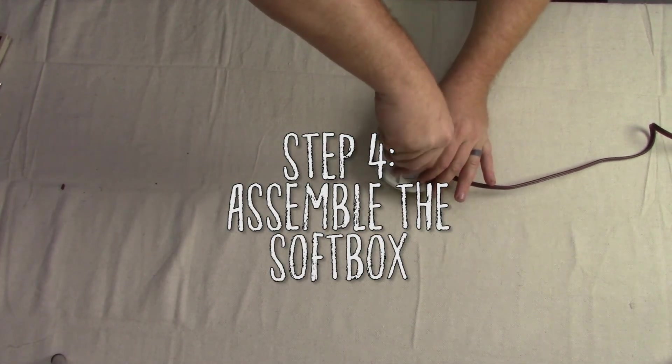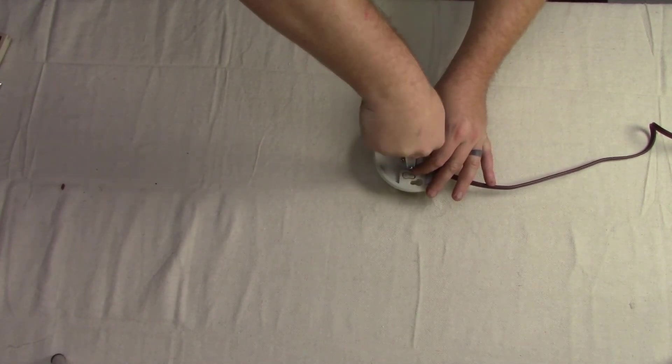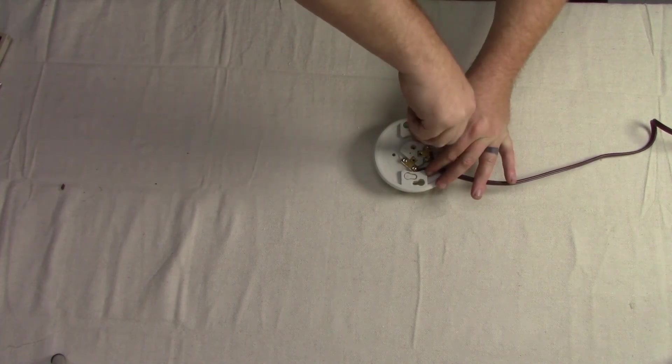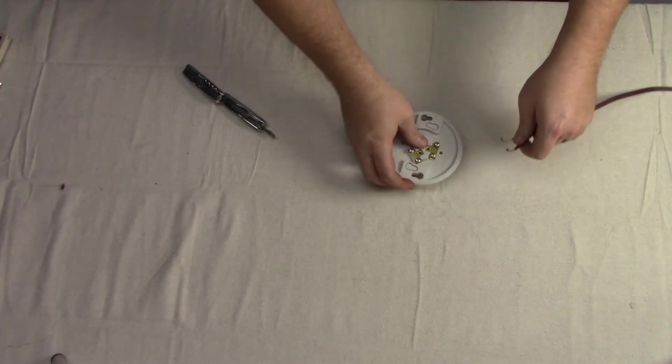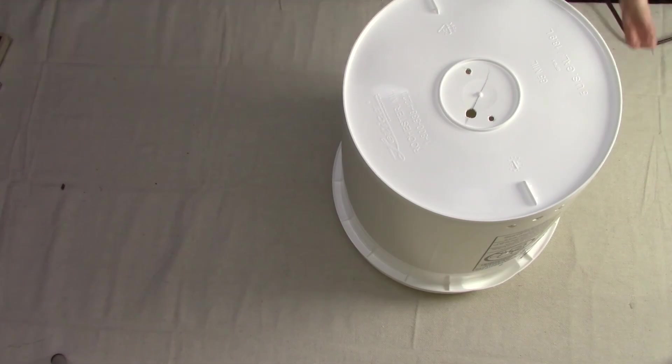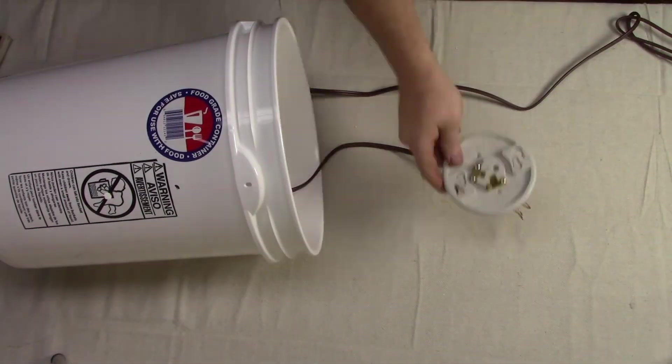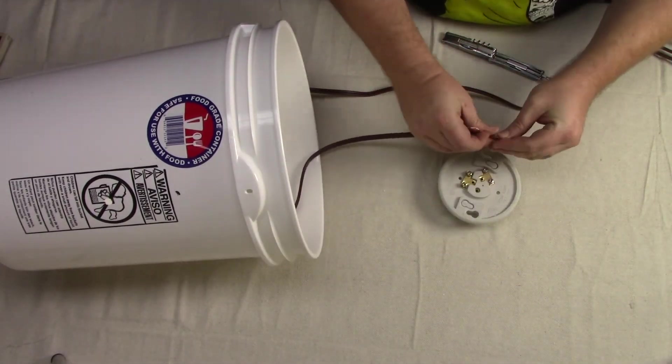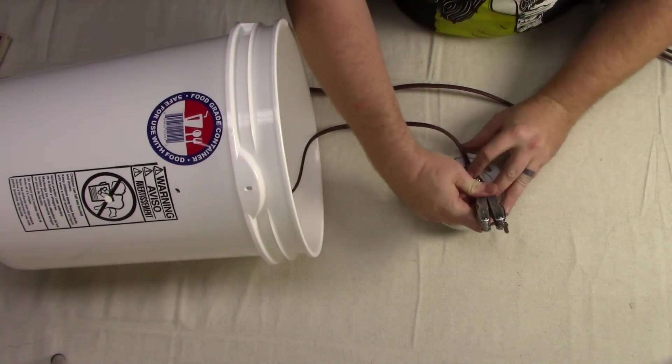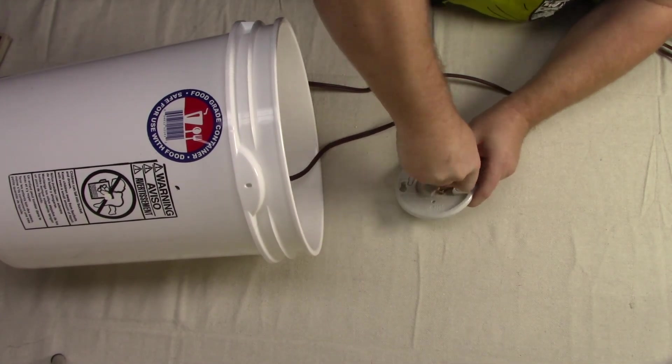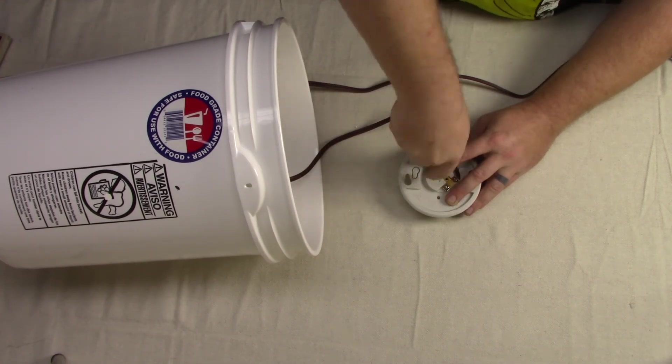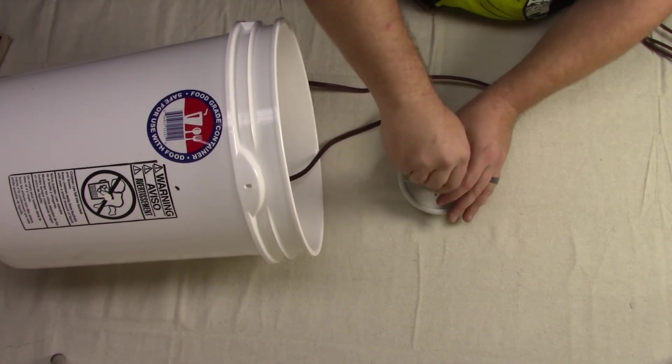Step four, assemble the softbox. We are almost finished. Grab the light fixture and remove the wiring from it, making sure to remember how you placed it on there. Now grab the bucket and feed the cord through from the bottom into the bucket and then out onto your work surface so that it can be rewired. Again, form the exposed wire into hooks and secure it to the light fixture the same way you had before.